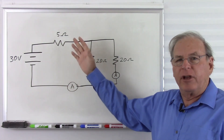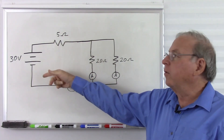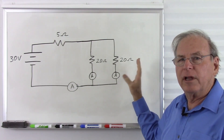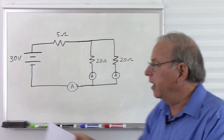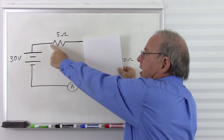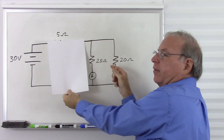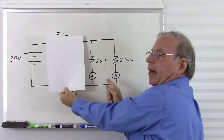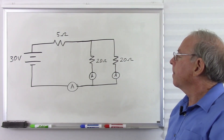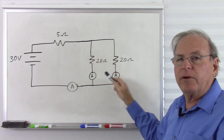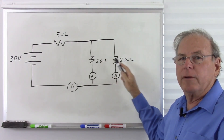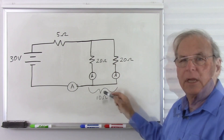Here's a very similar circuit with changed numbers. We have 30 volts, again 5 ohms, and this time two 20 ohm resistors in parallel. The series half has a battery and a resistor with only one current path, while the parallel half has two current paths. Since the resistors are equal, 20 ohms in parallel with 20 ohms gives a total of 10 ohms.